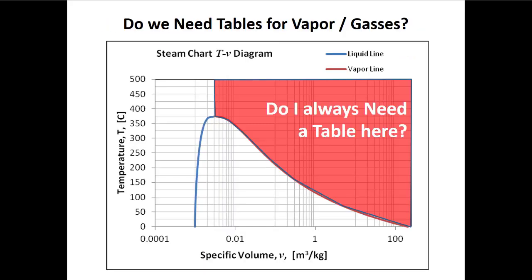Maybe you're asking: is there a shortcut we can take if we're above the vapor dome and to the right of the critical point — the region we've been calling superheated vapor? Today we're going to find out that the answer is sometimes. As engineers we need to know what assumptions we're making and when we can use specific strategies.